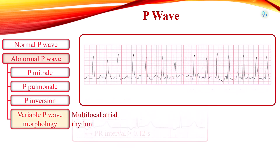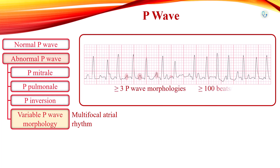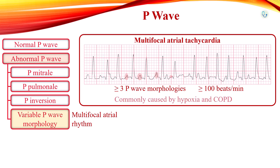Different P wave morphologies are due to multiple ectopic foci within the atria. If three or more different P wave morphologies are seen and heart rate is more than 100 beats per minute, multifocal atrial tachycardia is diagnosed. Multifocal atrial tachycardia is commonly associated with hypoxia and COPD.